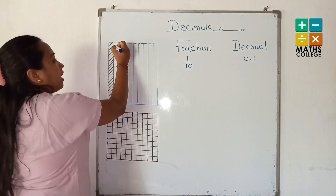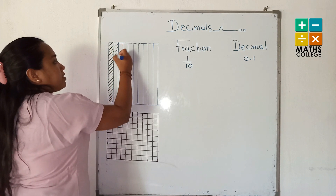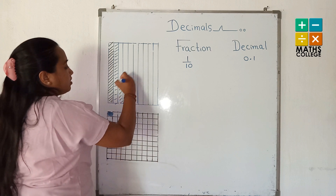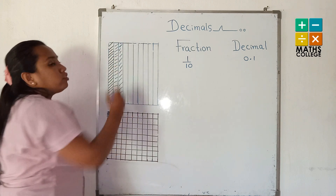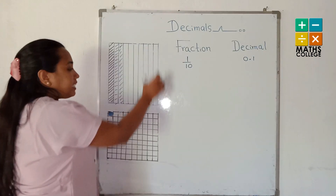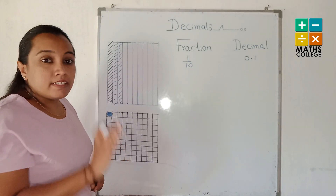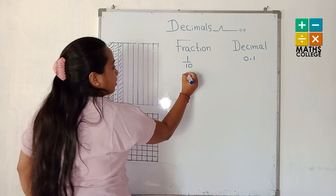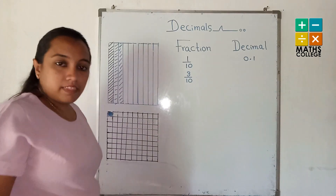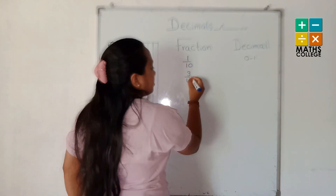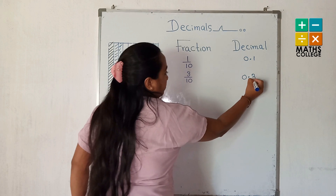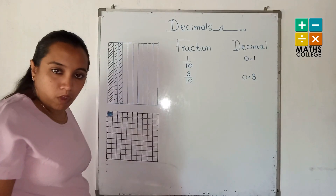I will color another two parts in this figure — another two parts. How do we write the shaded fraction? There are ten equal parts and three are colored. It can be written as three upon ten as the fraction. The decimal, three upon ten, is written as zero point three.